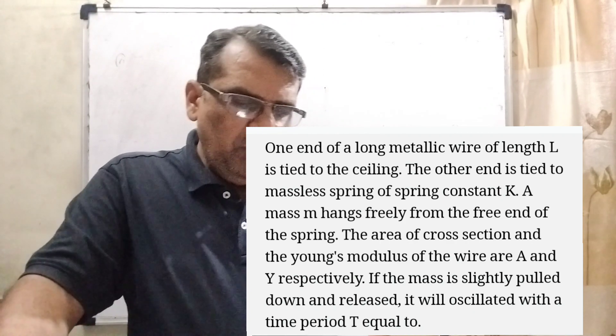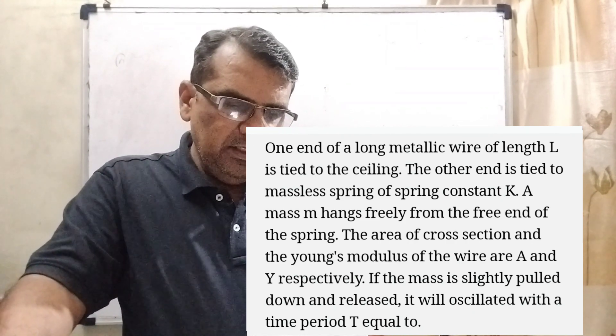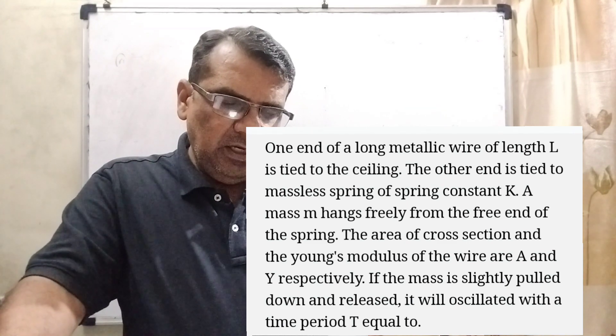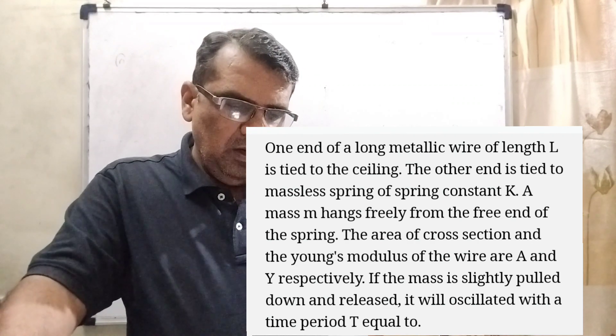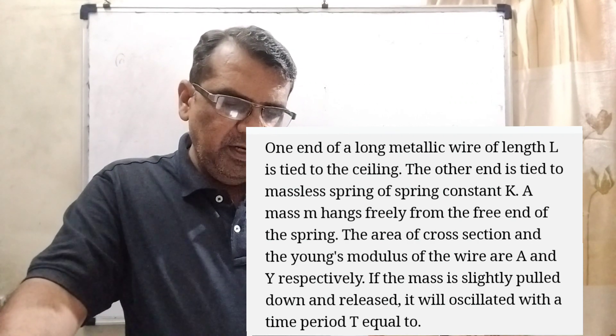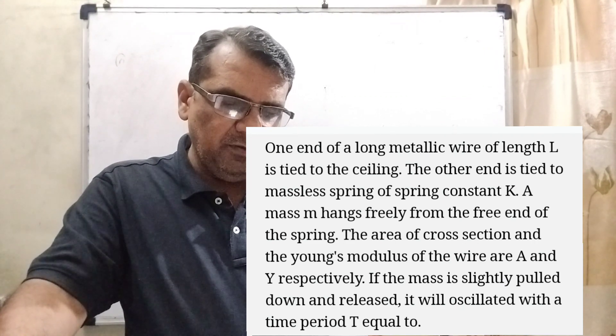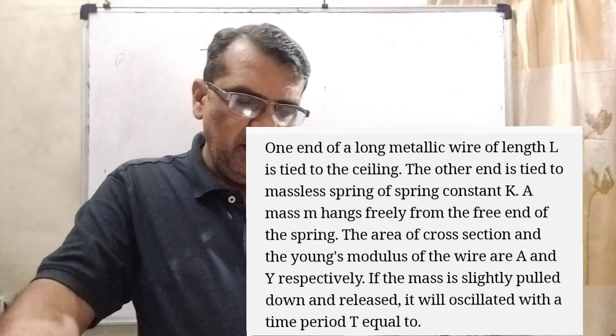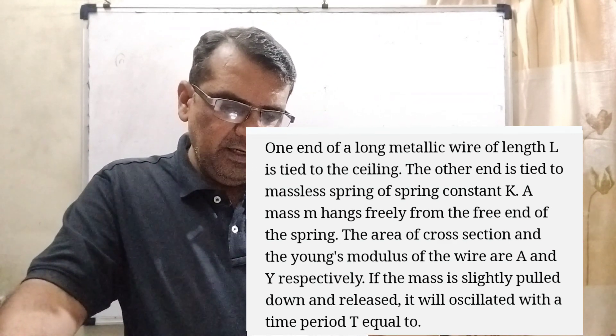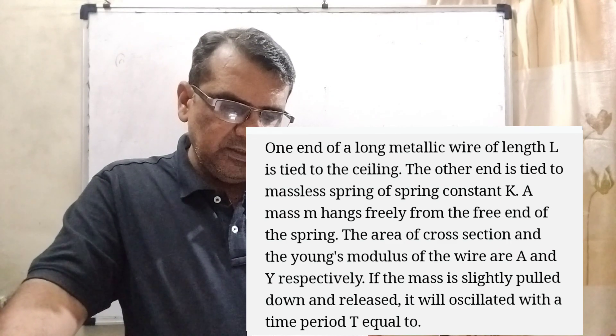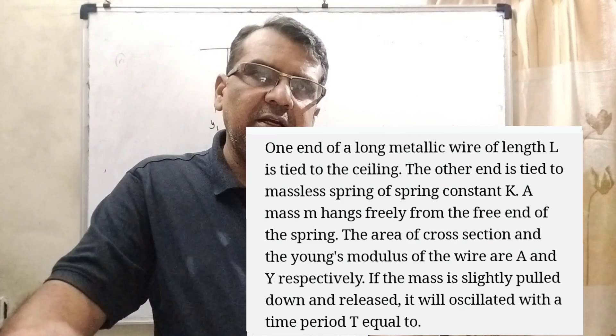Now here is the question. One end of a long metallic wire of length capital L is tied to the ceiling. The other end is tied to a massless spring of spring constant capital K. A mass small m hangs freely from the free end of the spring. The area of cross section and the Young's modulus of the wire are capital A and capital Y respectively. If the mass is slightly pulled down and released, it will oscillate with the time period equal to. This question is from IIT 1993.